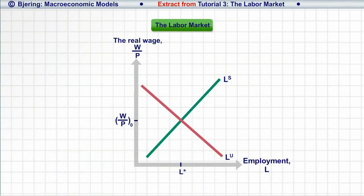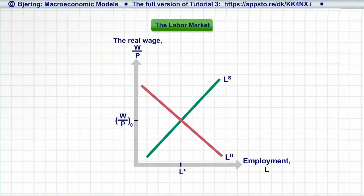So, the labor market graph indicates the economy's supply and demand for labor, and consequently the economy's employment, as a function of the real wage.